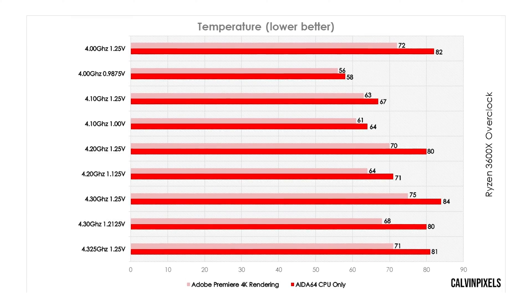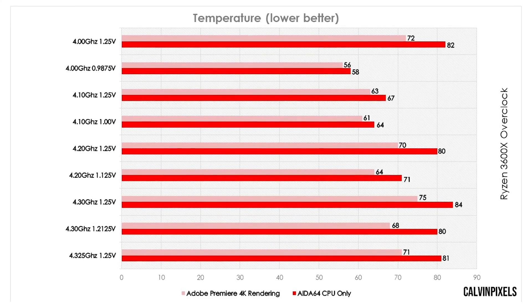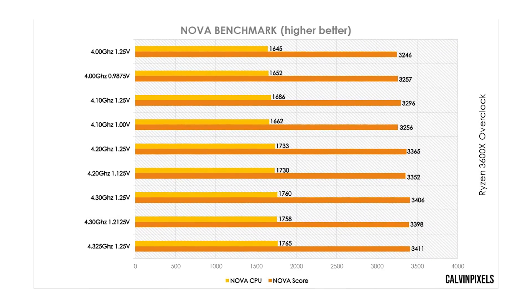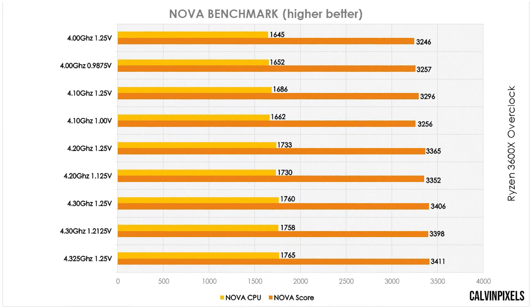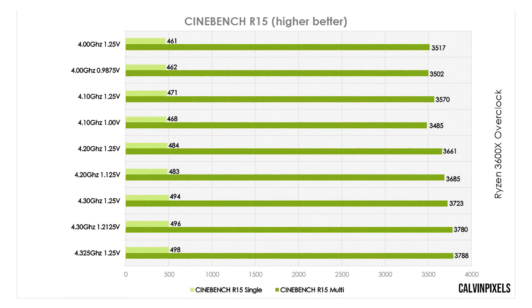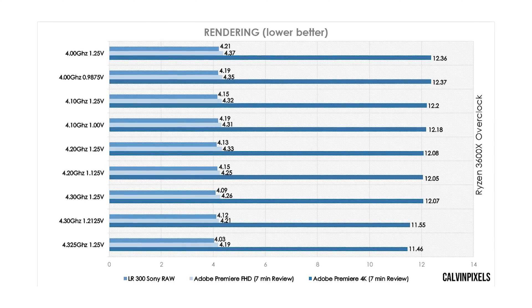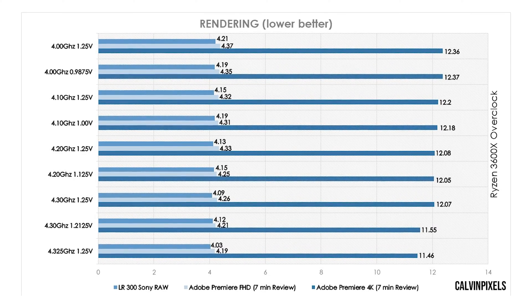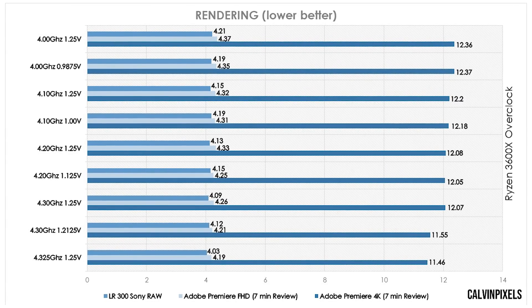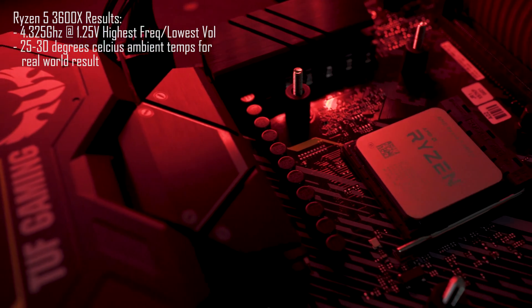So here are my results. Lowering the voltage at each frequency helps to lower the CPU temperature when running at full load or during rendering. Lowering the voltage reduced the synthetic benchmark score and Lightroom 300 RAW files rendering time slightly but nothing major or significant. Adobe Media Encoder seemed to favor higher frequency and low voltage to increase 4K and 1080p rendering speeds. The highest frequency I managed to overclock this processor was 4.325 GHz at 1.25V. All my tests were done at ambient temperature between 25 to 30 degrees Celsius, so this is a real-world overclocking scenario — no benchmark level conditions or liquid nitrogen cooling.